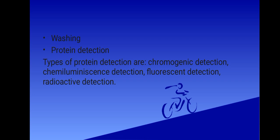Then we have protein detection. After the unbound probes are washed away, the Western blot is now ready for detection of the probes that are labeled and bound to the protein of interest. Enzymes such as alkaline phosphatase (AP) and horseradish peroxidase (HRP) are widely used in detection of proteins. We have four methods of detection: radioactive detection, fluorescent detection, chemiluminescence detection, and chromogenic detection.